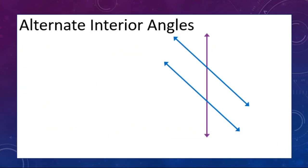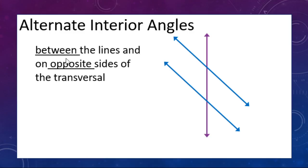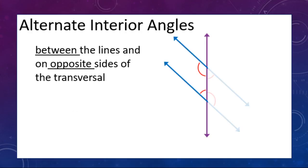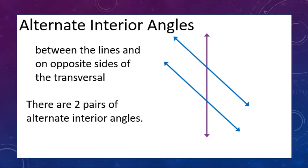Now let's look at alternate interior angles. These are between the lines and on opposite sides of the transversal. We ignore the exterior angles and focus only on the interior angles — there are four of them. The 'alternate' part means they are on opposite sides of the transversal, giving us two pairs of alternate interior angles.